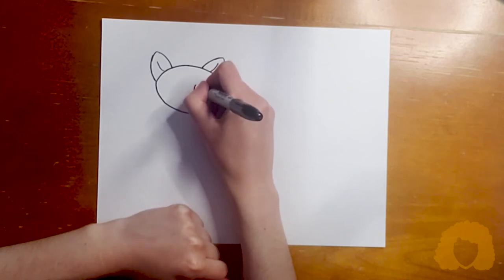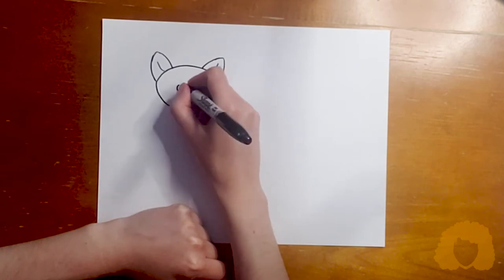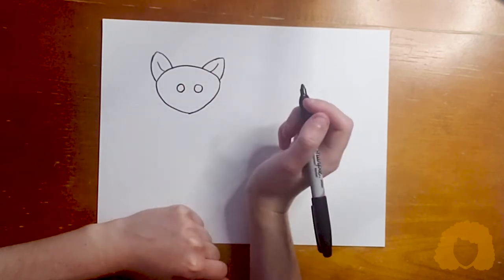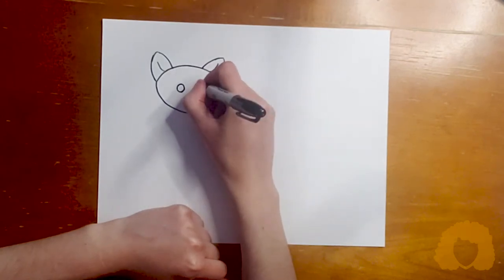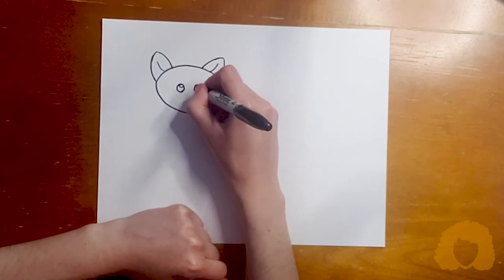My next step are going to be my eyeballs, and so my eyeballs are going to be pretty low on the head, especially compared to say a cat. I made mine into circles and I like to add a little curve for a white spot before putting in my pupils.